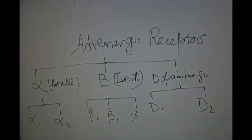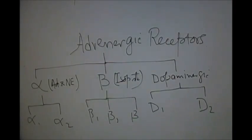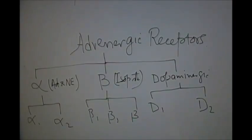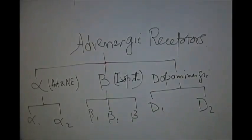The adrenergic receptors are of three types: alpha, beta, and dopaminergic. The alpha receptors are most responsive to adrenaline and noradrenaline, beta to isoproterenol, and dopaminergic to dopamine.